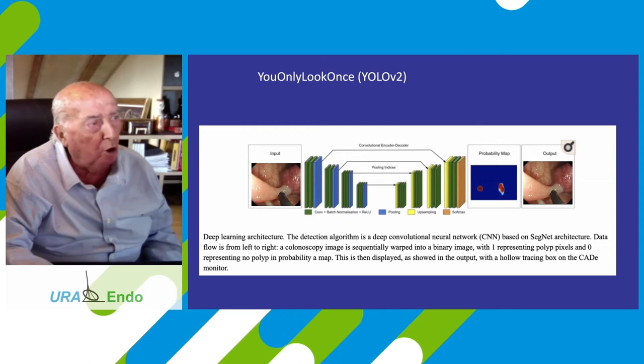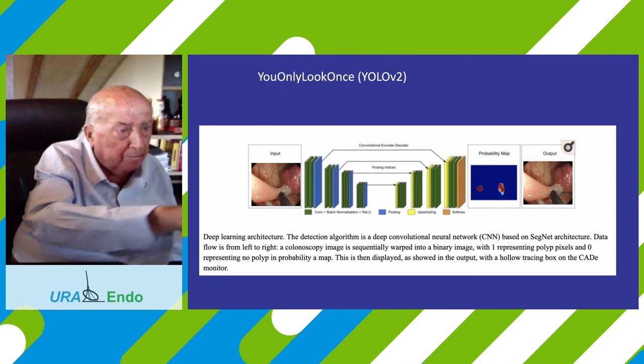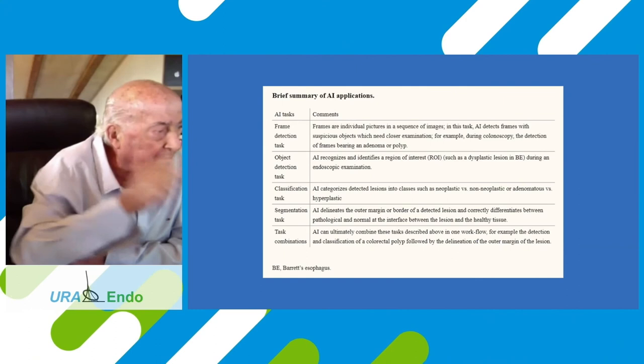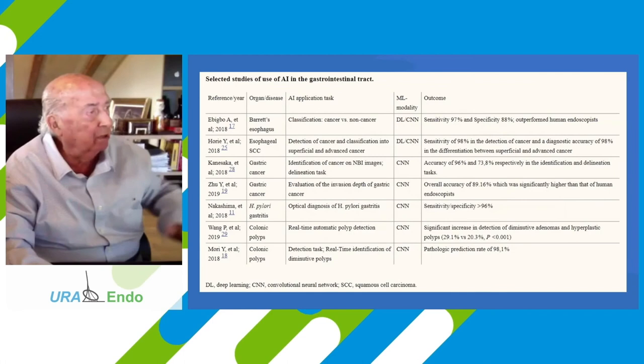This is also the convolutional encoder. The coder is the same program: polyp input, polyp output — recognizing the polyp during the examination in the middle. This is important. This is the terminology: segmentation and task combinations, showing the different systems.